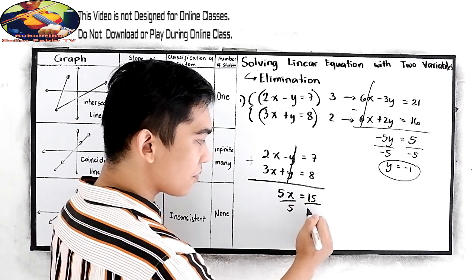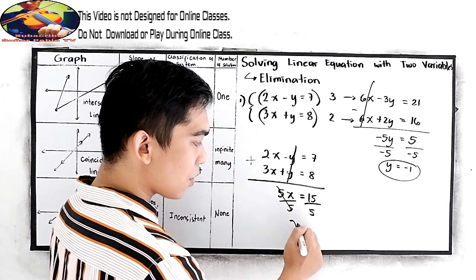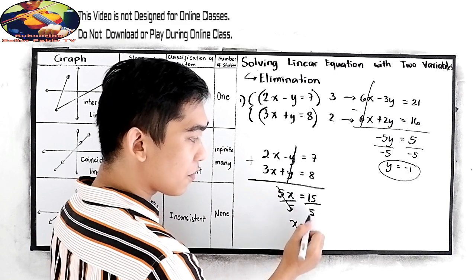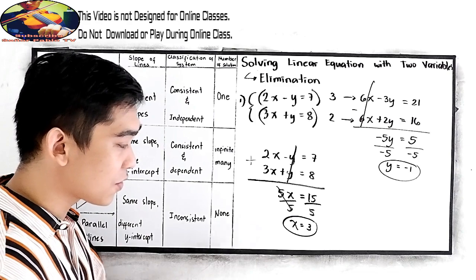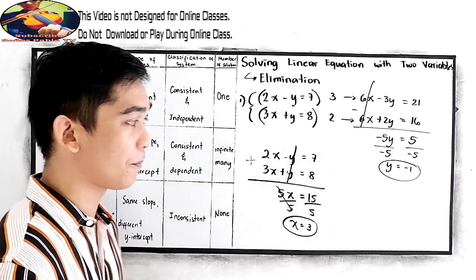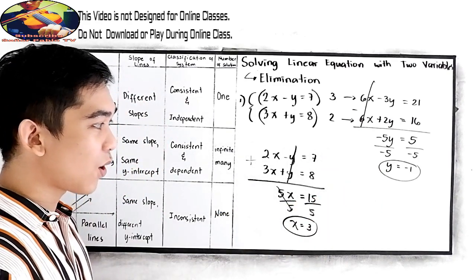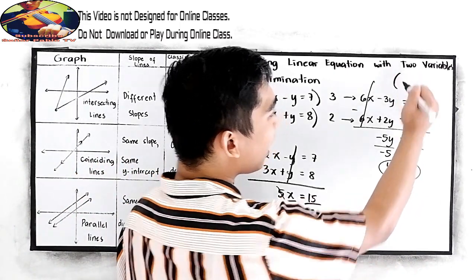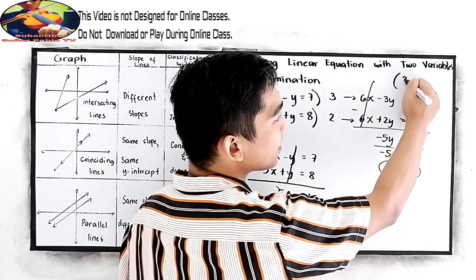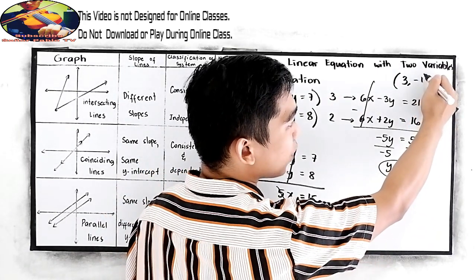Divide by 5. So our x is equal to 15 divided by 5, 3. Now we have the values for x and for y. So our solution now is our x is 3, and our y is negative 1.